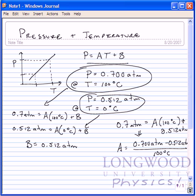and that gives me a value so that I have a linear equation for the thermometer. Like so, P equals 1.8 times 10 to the minus 3 atm per degree Celsius times temperature plus 0.512 atm.